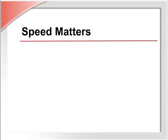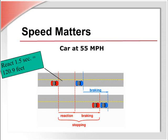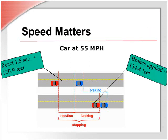Suppose a person is driving at 55 miles per hour during the day on a dry level road. He sees a stopped car in front of him and applies the brakes. What is the shortest stopping distance that can be reasonably expected? Factoring in a reaction time of 1.5 seconds, the car will travel 120.9 feet before the brakes are applied. The stopping distance once the brakes are engaged will be 134.4 feet. The total stopping distance will be 255.3 feet. As you can see, reaction time plays a big part in the stopping distance, which is why it is important to always stay alert.